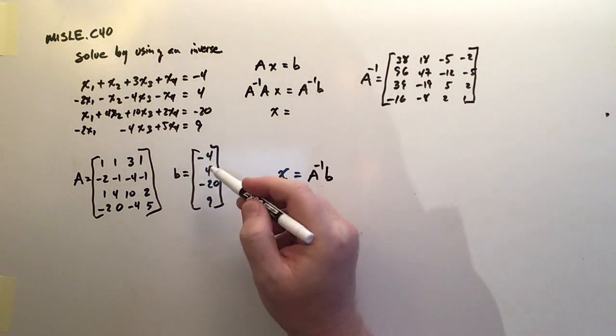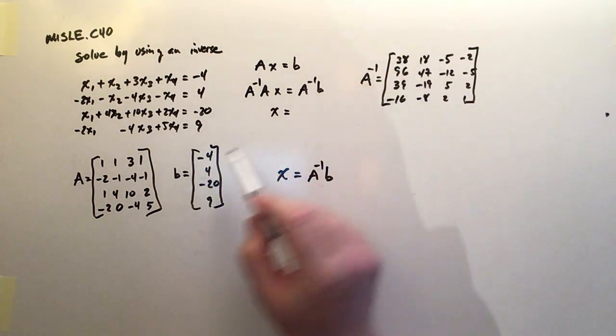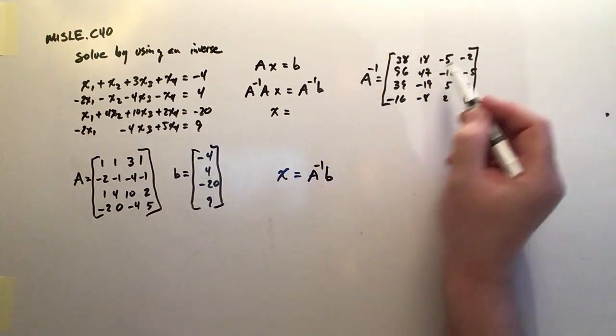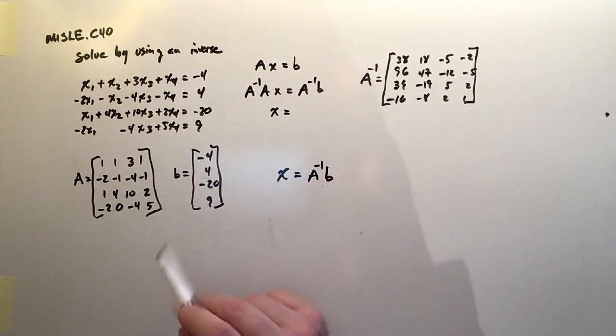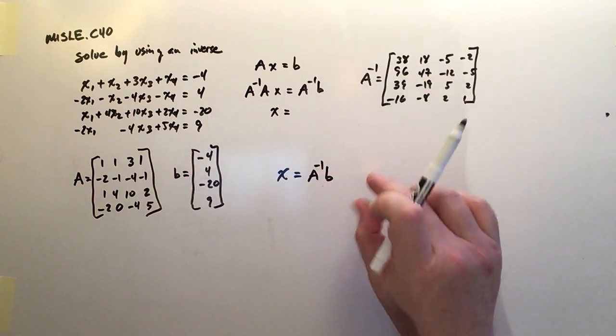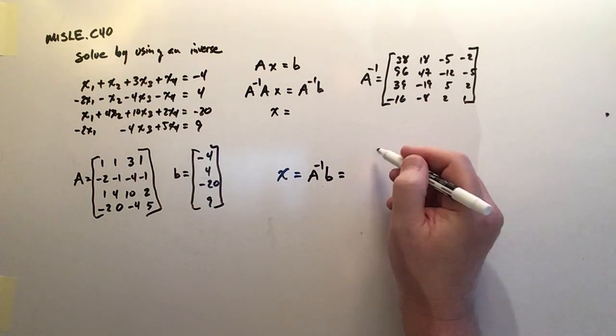I'm only going to get a single 4-column or a single 1-column vector of 4 members, because all of these guys are going to turn and make a column which multiplies 38 times negative 4, 18 times 4, negative 5 times negative 20, negative 2 times 9, and then all that's going to be added together to make this top value.